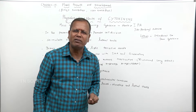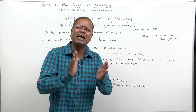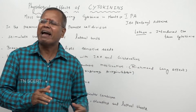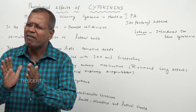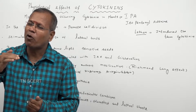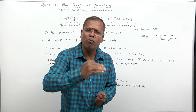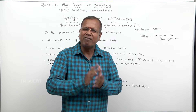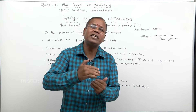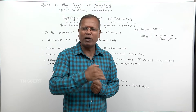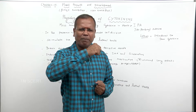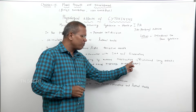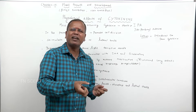A very important effect: cytokinin delays the process of aging in plants. This is also known as the Richmond-Lang effect. The aging process is delayed by mobilizing nutrients.